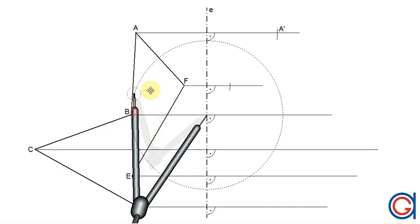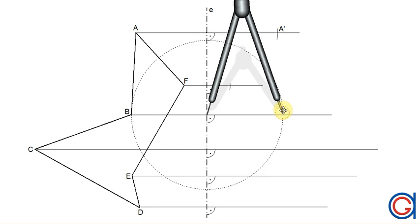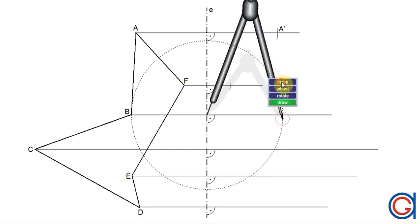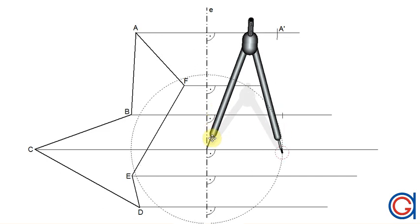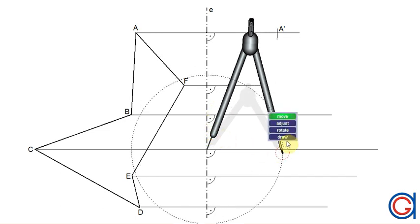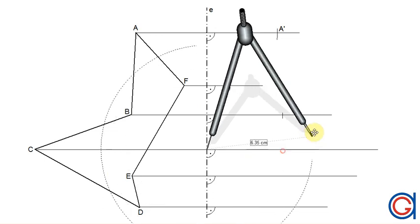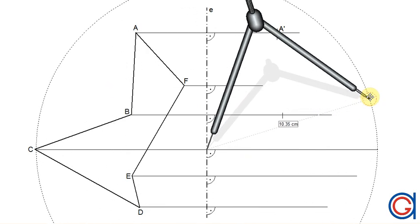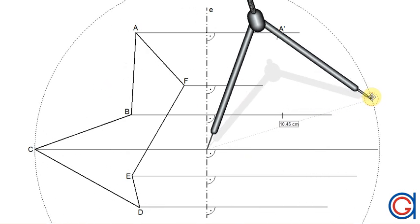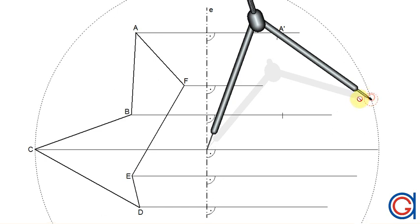And now we do the same with B, obtaining a new vertex B prime. We continue this process with vertex C, obtaining a new vertex C prime.